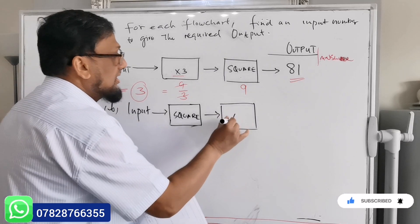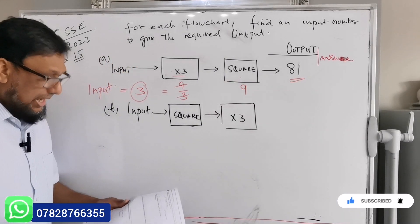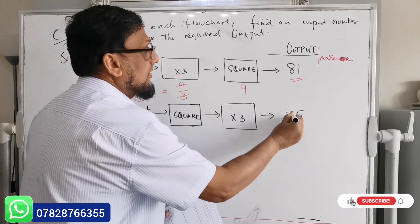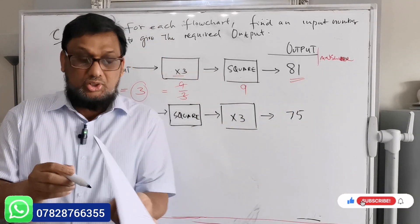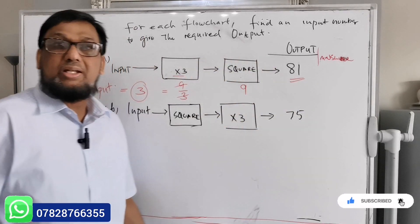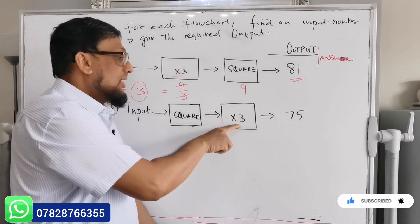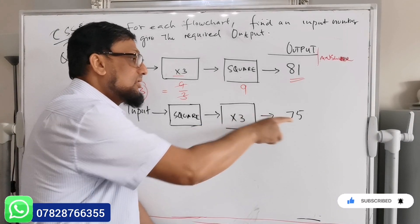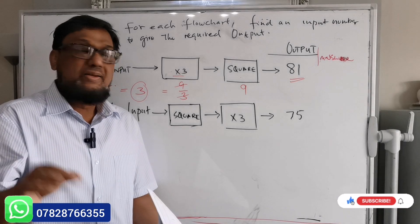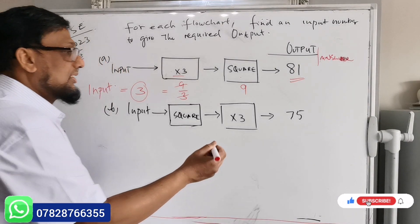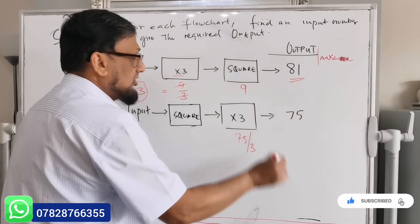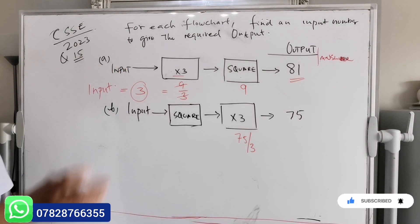Very simple, very easy. What you're going to do is backward calculation. Answer is already given, go back. If it's times, the inverse is divide. So what you're going to do, very simple: 75 divided by 3.